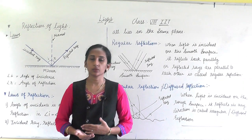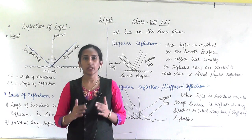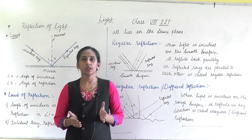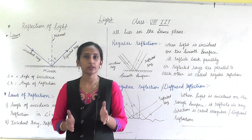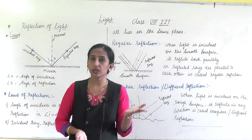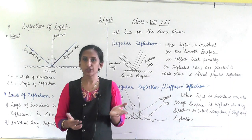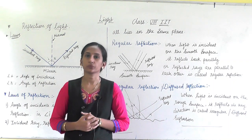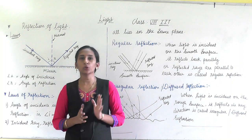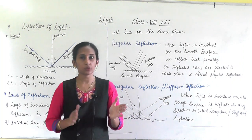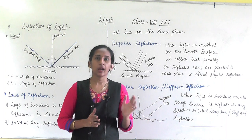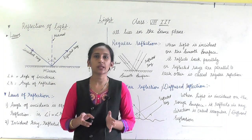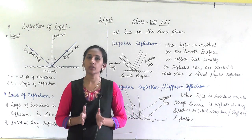In luminous objects, the examples are classified into two types: some are natural or living, and some are artificial. Your homework is to write two examples each of natural luminous objects and artificial luminous objects, and send them to me.